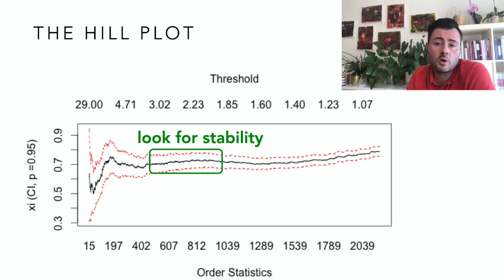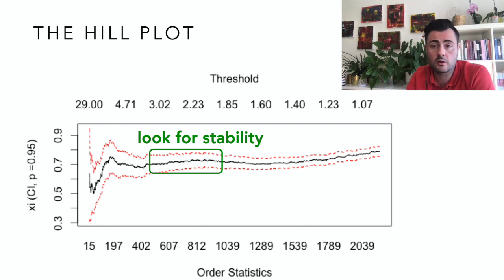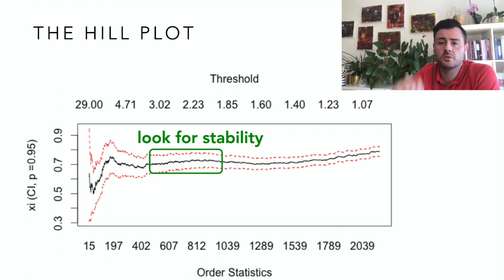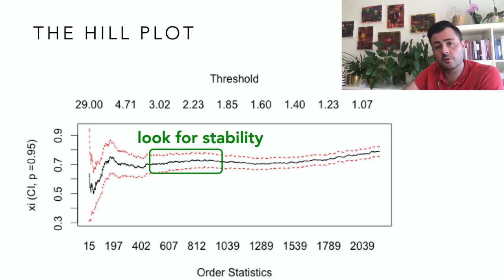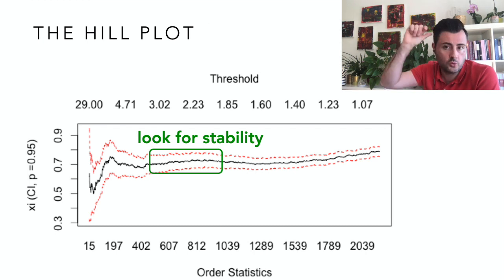A typical Hill plot is the one you see on your screen. You see the behavior of the estimator, and at a certain point there is some stabilization of the value, which I have underlined with the green rectangle. This is what we can consider the first really stable area. It means that our educated guess about the Xi parameter corresponds to that area, and for the K, we look down to see how many observations we need to consider, and we look up to find the value of the threshold. In the R application later we will see the Hill plot and its interpretation in more detail.